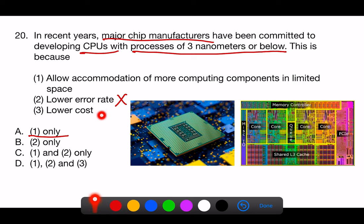3. Lower cost is not a direct result of smaller process nodes either. The development and manufacturing costs for smaller process technologies are often higher due to the increased complexity and precision required in manufacturing. Over time, as the technology matures and yields improve, costs may decrease, but this is not a guaranteed immediate benefit of a smaller process node.